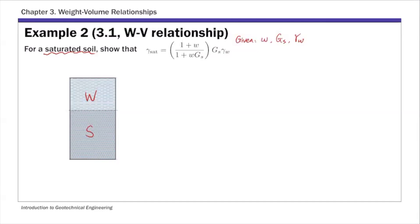We have this phase diagram, and remember we have the weight side and the volume side — weight on the left, volume on the right. This is an example where everything is given in terms of ratios. That's one of the key points for solving weight-volume relationship problems. Water content is a ratio, specific gravity is a ratio, unit weight of water is a ratio, and saturated unit weight is also a ratio.